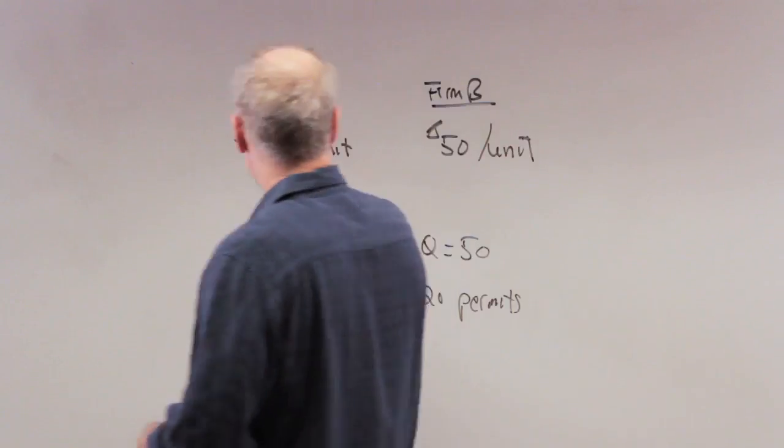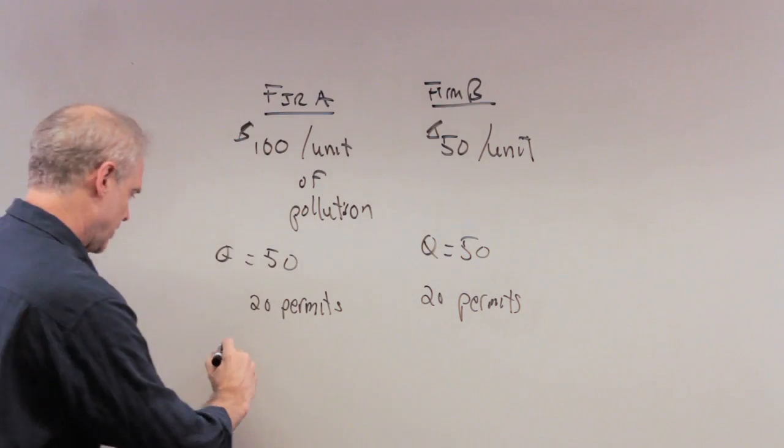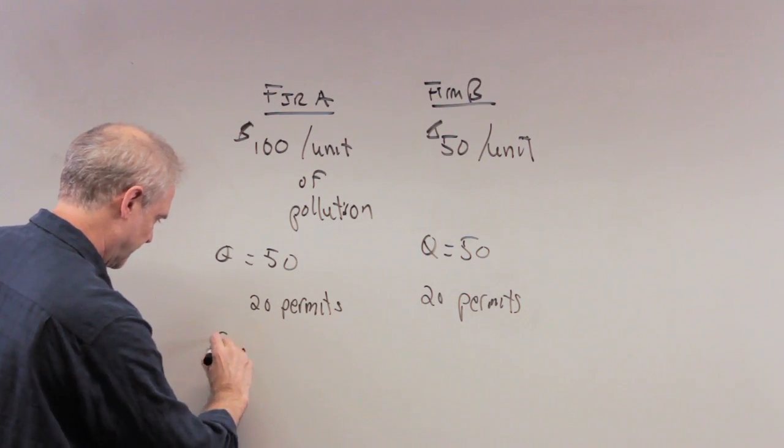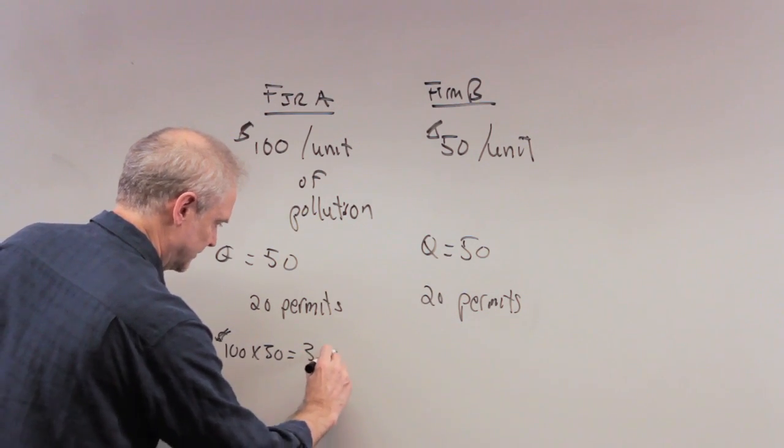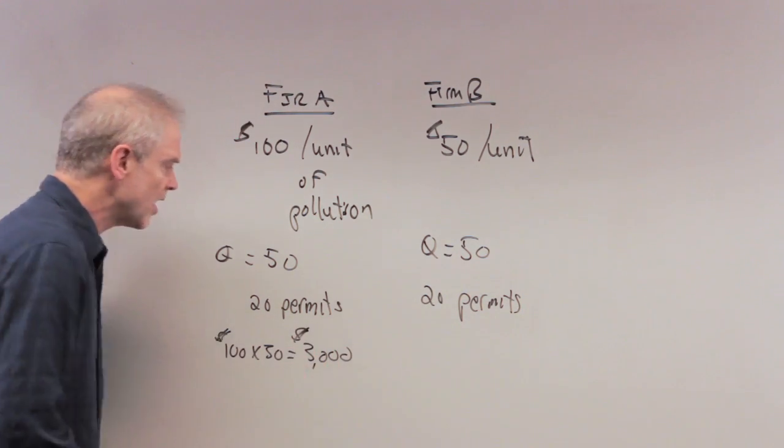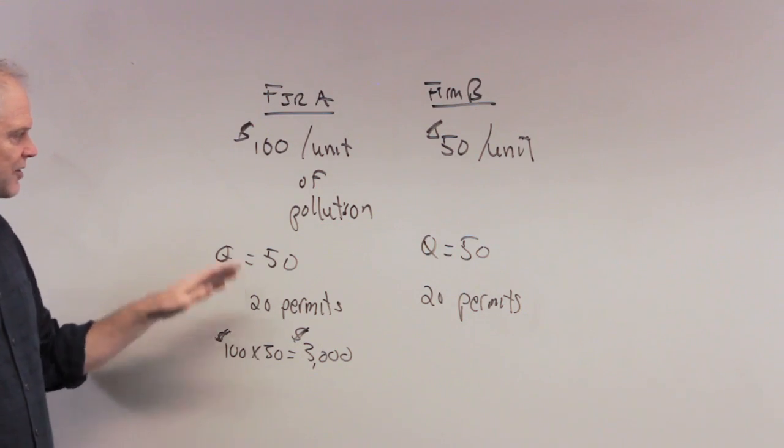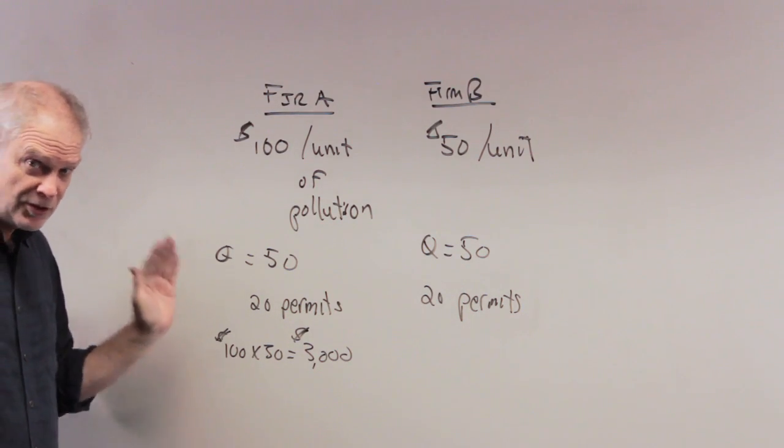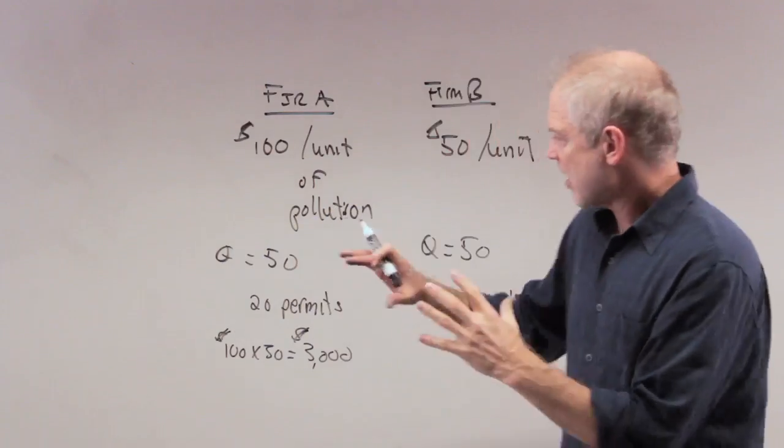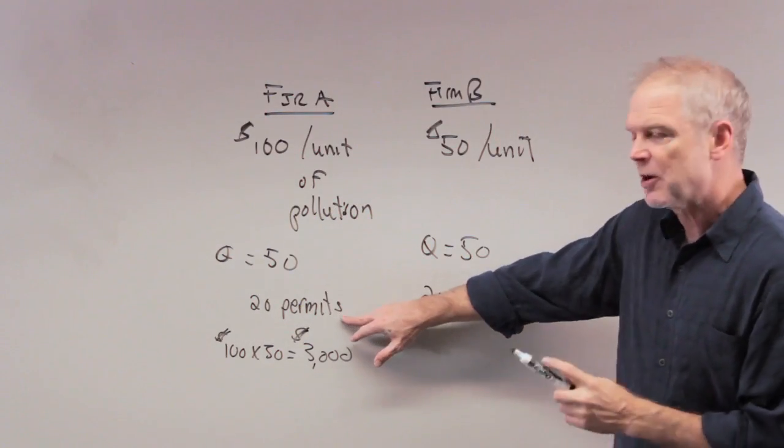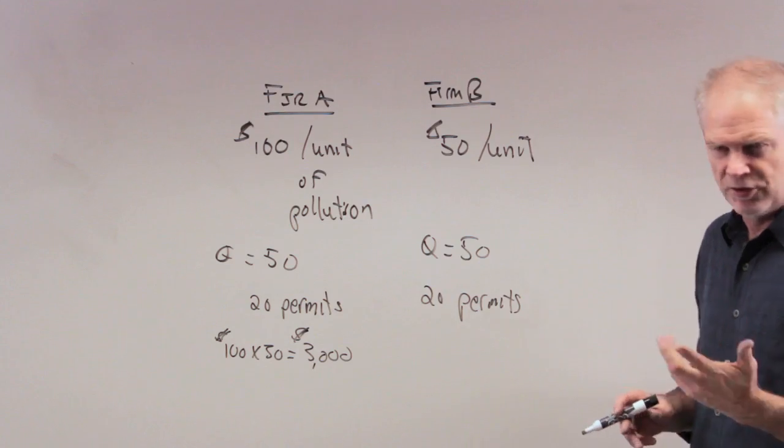What is that going to cost? Well it's $100 per unit times 30 units, so it's $100 times 30, that's $3,000. So it's going to cost firm A $3,000 to get rid of the 30 pollution, quantity of pollution that it has because it only has permits for 20. It's only allowed to pollute 20 units of pollution.